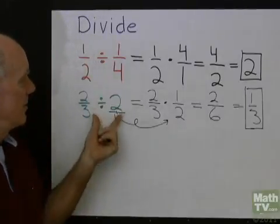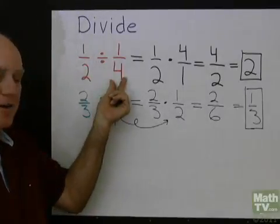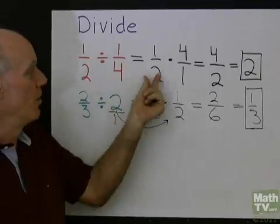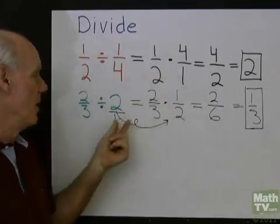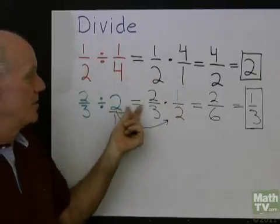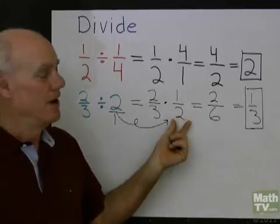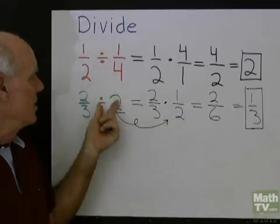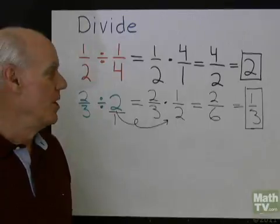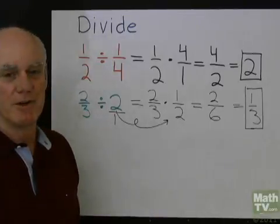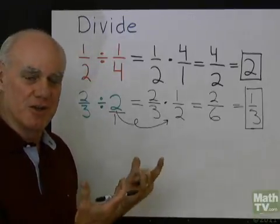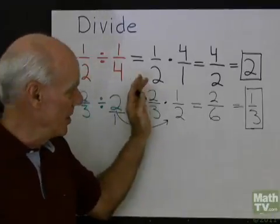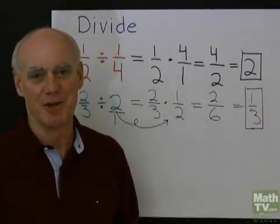So the idea is the same in both of these problems. Here, instead of dividing by 1 fourth, we multiply by 4 over 1. Here, instead of dividing by 2, we multiply by 1 half. So by doing this, by changing every division problem to a multiplication problem, we don't have a new rule for division. We just change everything that's division into multiplication and then use the rules we already have to multiply.